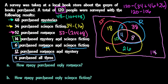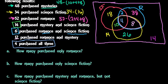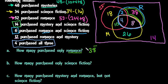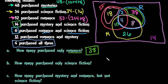Setting up the diagram is the hardest part — once done, you answer the questions. How many purchased only romance? Only romance means just this part of the circle, which is 38. How many purchased only science fiction? Only science fiction means just this portion, which is 18.